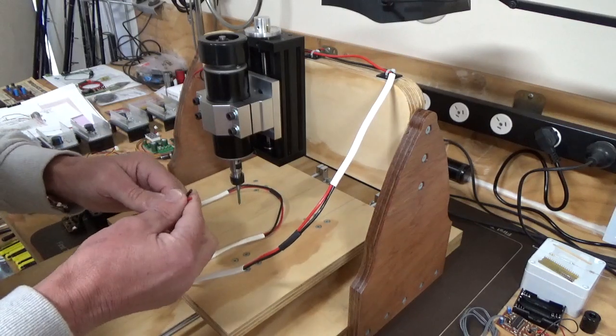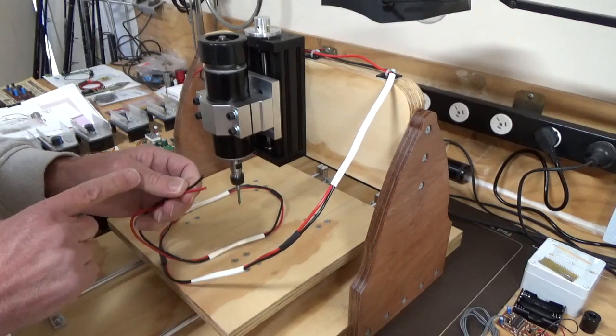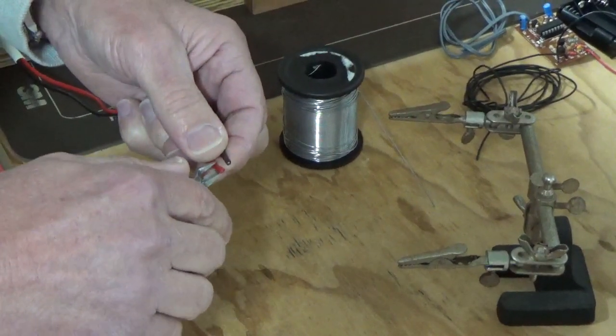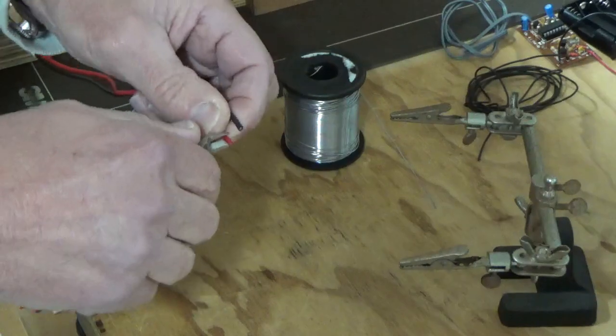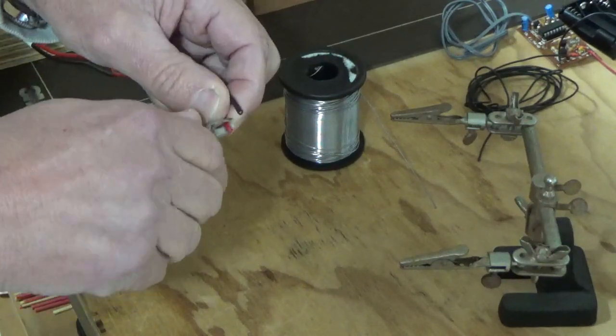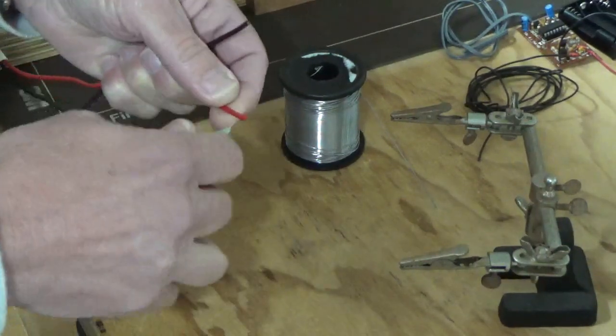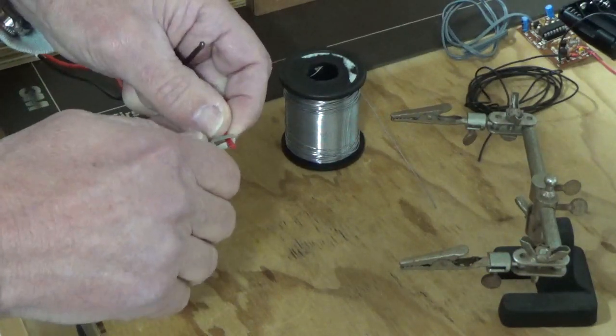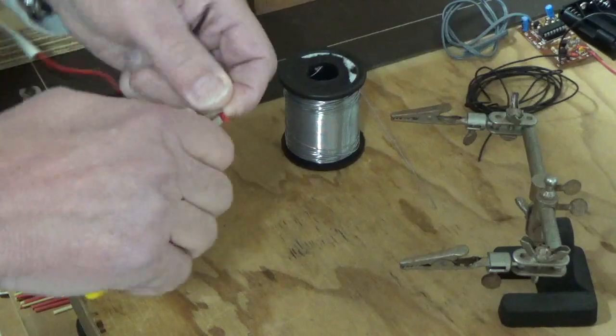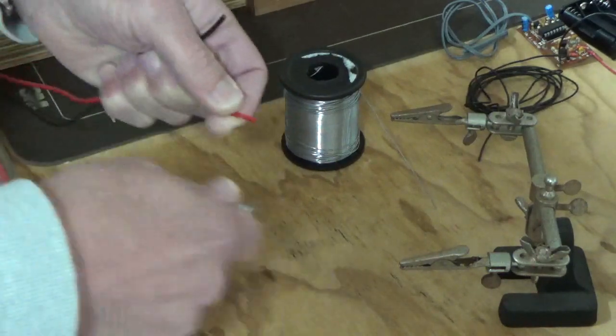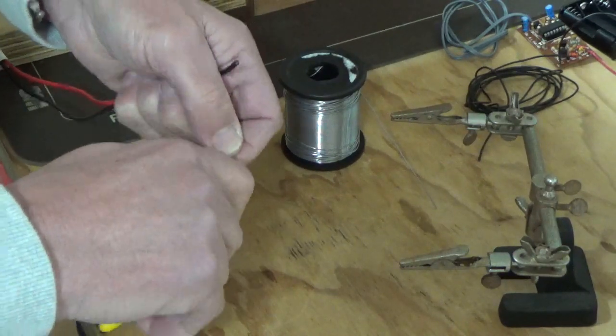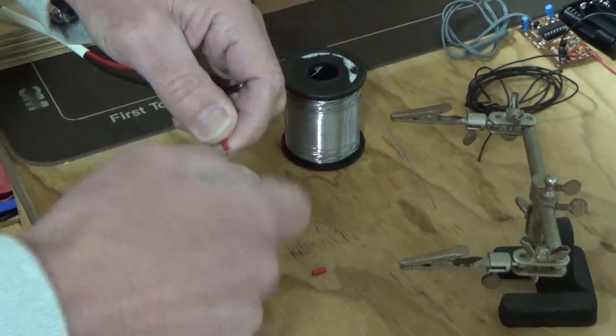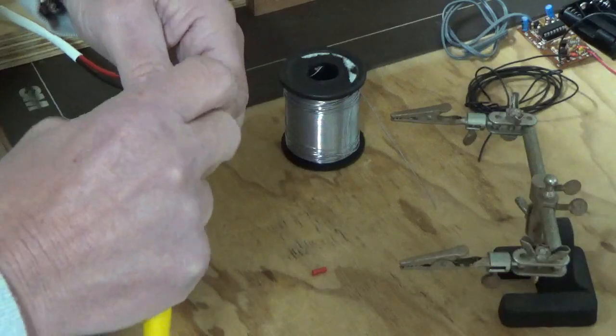What we're going to do now is put the termination points on. The first part is to strip some of the insulation off the wire. I'm just doing this with some side cutters - you can use fancy tools, but I find this works effectively. The thing you've got to be careful of is not to cut your wire strands. Then twist the wire up.